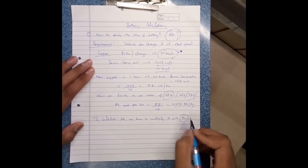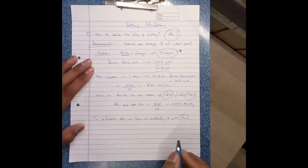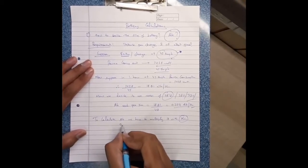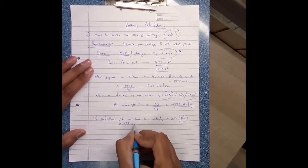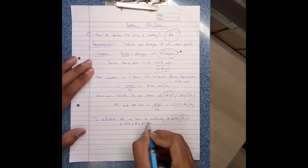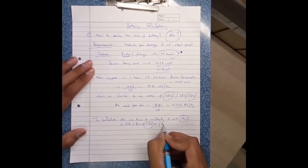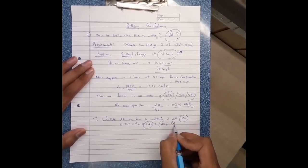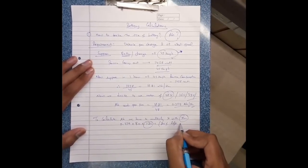Now kilometer requirement is 80 kilometer. So 0.379 into 80 into 1.25. This 1.25 is the 20% battery left after drive.